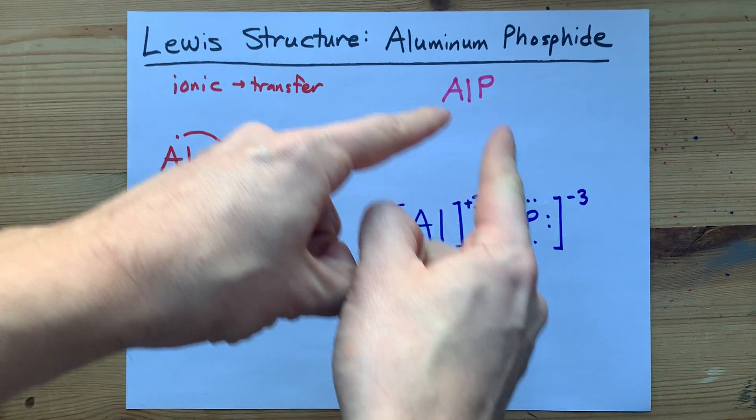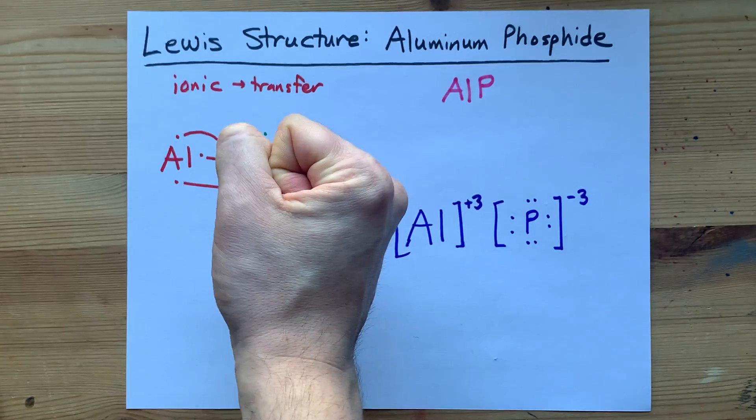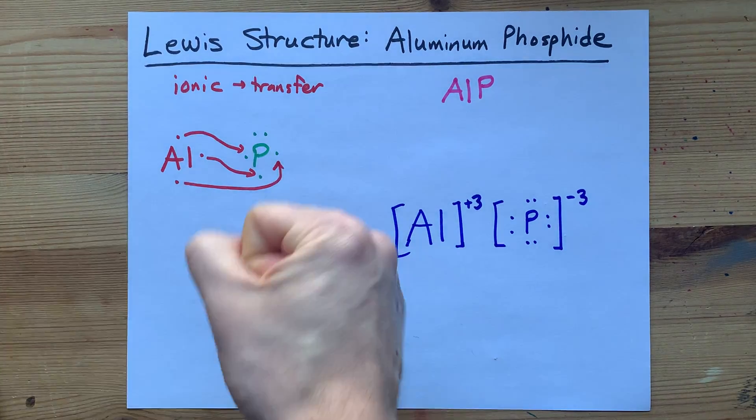Minus three charge for phosphorus, plus three charge for aluminum. Crisscross, you get one of each. It's a beautiful thing, just like this diagram and just like you. Best of luck.